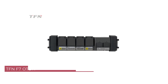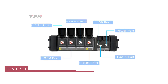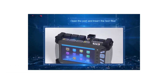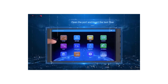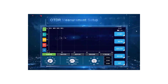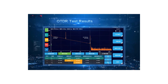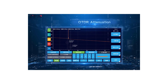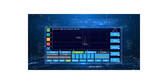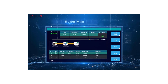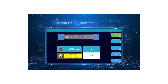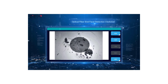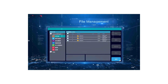Number 5. TFNF7 OTDR Fiber Optic Tester. The TFNF7 OTDR Fiber Optic Tester is a powerful and versatile tool designed for professionals working in the field of fiber-optic network installation, maintenance, and troubleshooting. With its compact size and robust features, it stands out as a reliable choice for both single-mode (SM) and multi-mode (MM) fiber-optic testing applications. One of the standout features of the TFNF7 is its impressive measuring distance capability, reaching a maximum of 240 kilometers. This extensive range allows technicians to conduct comprehensive tests on long-haul fiber-optic networks without the need for frequent repositioning or adjustments.